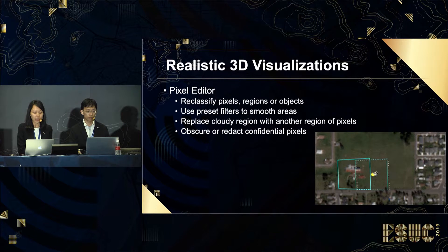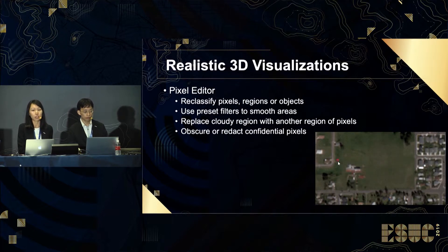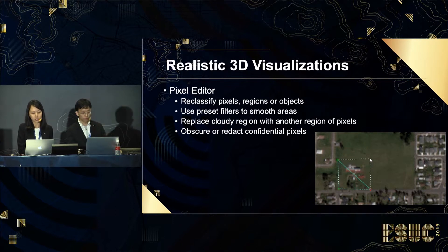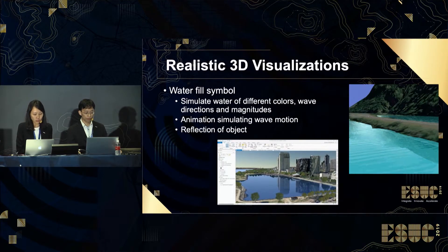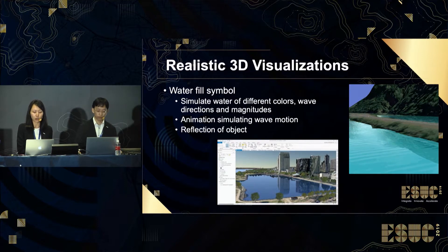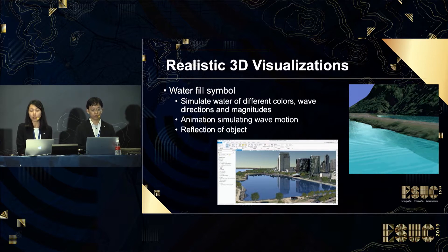The Pixel Editor also allows replacement of a region of an image containing occlusion with another region of pixels, which can be useful for military operations where it may be necessary to obscure or redact confidential pixels for national security. The WaterField Symbol Tool is a tool that can be configured to simulate water of different colors, wave directions, and magnitudes. The tool is able to simulate an animation of the wave motion of a body of water of configurable size.